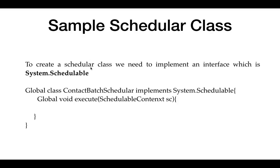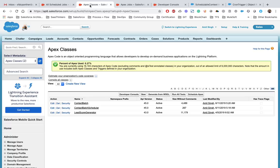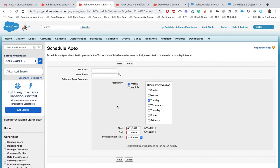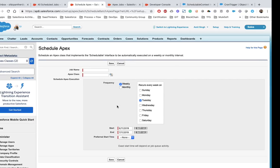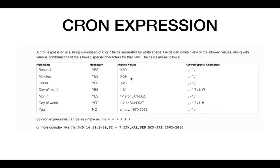The standard Salesforce wizard only allows scheduling on a weekly or monthly basis. But what if we have a more complex requirement — for example, executing our batch Apex every one hour? In that case we cannot use the standard wizard provided by Salesforce. For that, we need to write a custom cron expression to achieve our requirement and schedule the class accordingly.